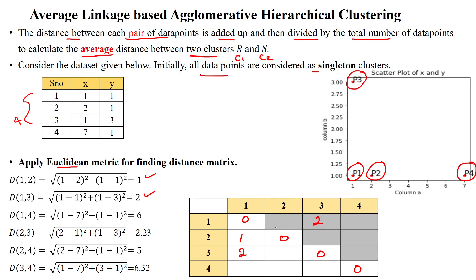The distance 1,4 is 6, and 4,1 is also 6. The distance 2,3 is 2, and 3,2 is also 2. The distance 2,4 is 5, and 4,2 is also 5.